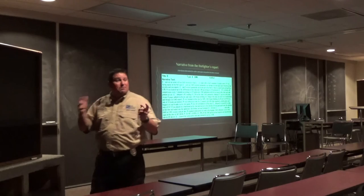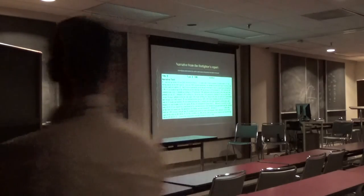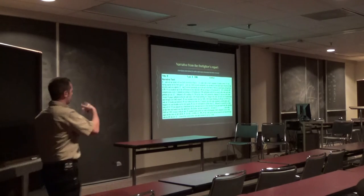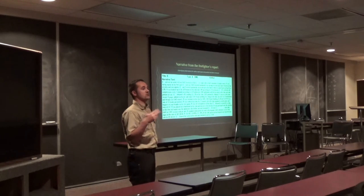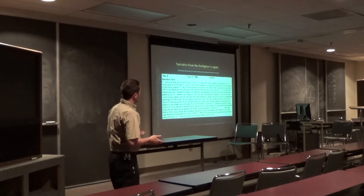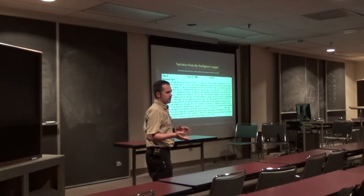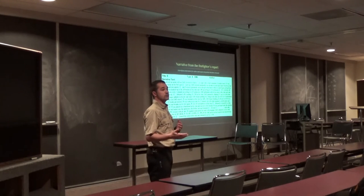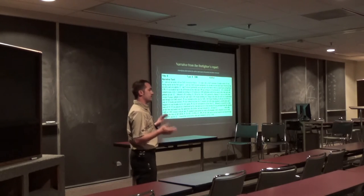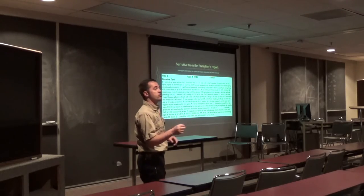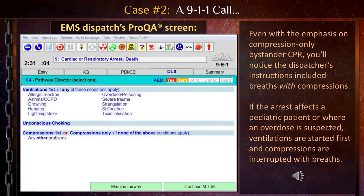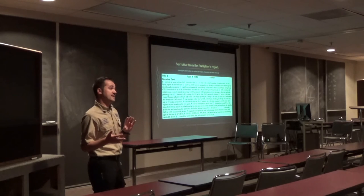Things have changed with dispatcher protocols. Version 13 of the dispatch software has been released, perfecting pre-arrival CPR instructions. Previously, dispatchers had to ask multiple questions before getting to CPR instructions — that took a long time. Now, if a caller says their loved one isn't breathing, the dispatcher hits the letter O on the keyboard and it fast-tracks straight to chest compressions. Studies show this makes hands-on-chest about 60 to 90 seconds faster. This new protocol was implemented around March 9th.